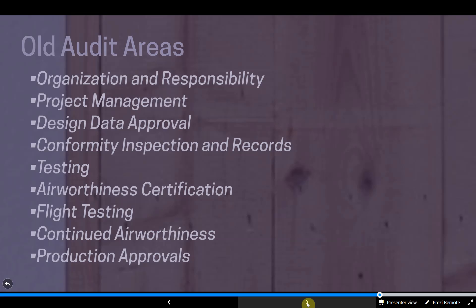The old approach was spelled out in Chapter 6 of earlier versions of the order with all the criteria laid out in Appendix C. There were nine different areas for an ODA to look at, which included organization and responsibility, project management, design data approval, the conformity inspection process, records, testing, airworthiness certification, flight testing, continued airworthiness, production approvals, and operations certifications — though we don't actually do operations certification as it's outside of what is applicable to us. If you look at all of these bullet items, you'll recognize that everything is very project-centric.